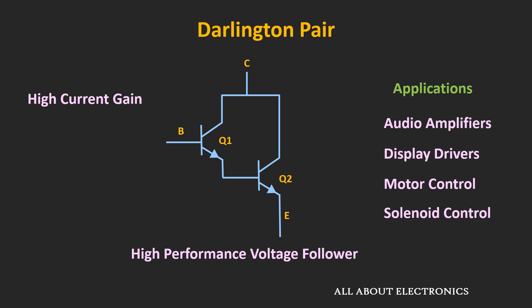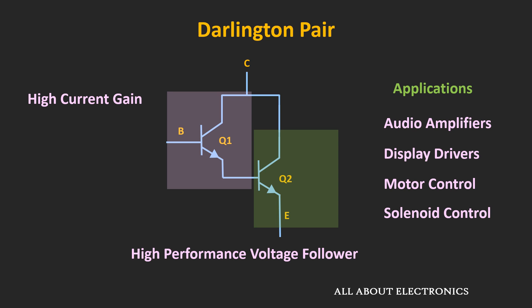When this Darlington pair is used as an amplifier, it can be considered as the cascaded connection of two common collector amplifiers — this is the first common collector amplifier and this is the second one. In the common collector configuration, the input is applied at the base terminal while the output is taken across the emitter terminal. Here, the emitter of the first transistor is connected to the base of the second transistor, meaning the output of the first amplifier is connected to the input of the second amplifier, and the output is taken across the emitter of the second transistor. So basically, it is the cascaded connection of two common collector amplifiers.